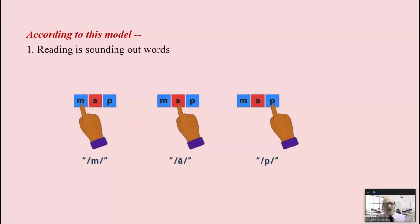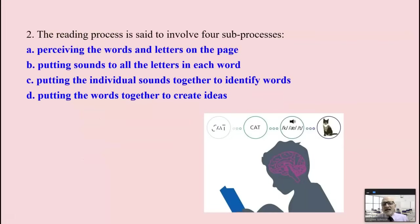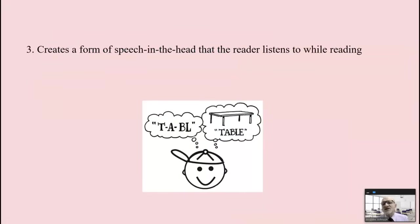According to this model, reading is simply sounding out words. Good readers are good sounder-outers. According to this model, reading is said to involve four sub-processes that happen in an instance. You perceive the words in letters. You put sounds to all the letters in each word. You put individual sounds together to create words and you put the words together to create ideas. This all happens in an instant, in a millisecond, and magically you are reading or so it says.